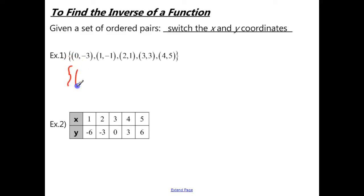all we need to do is switch the x and y's. So we have the point negative 3, 0, the point negative 1, 1, the point 1, 2, the point 3, 3, and the point 5, 4.